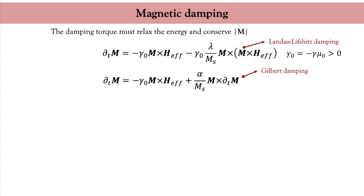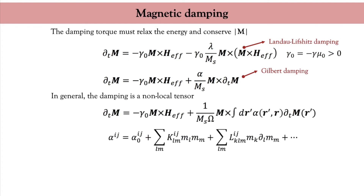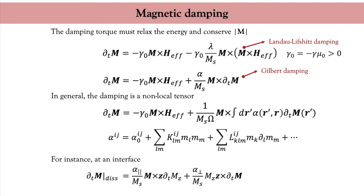In most discussions we will use Gilbert's form of magnetic damping. In the most general case, the magnetic damping is a non-local tensor whose elements may also depend on the magnetization direction, determined by applying symmetry operations. For example, at an interface, one expects the magnetic damping to be anisotropic.